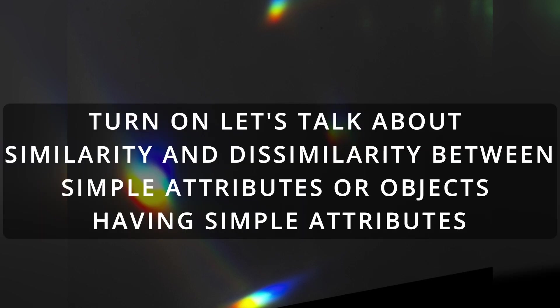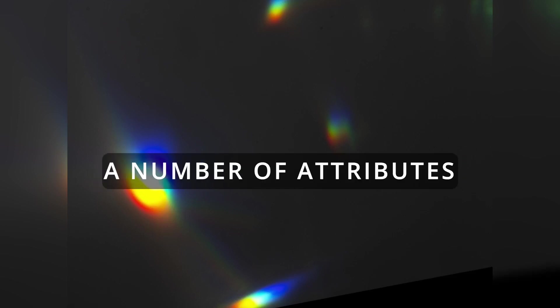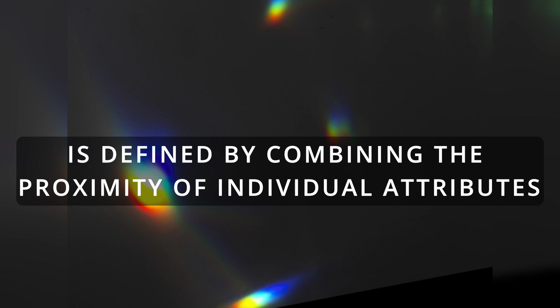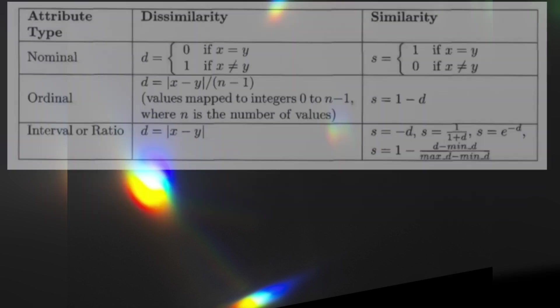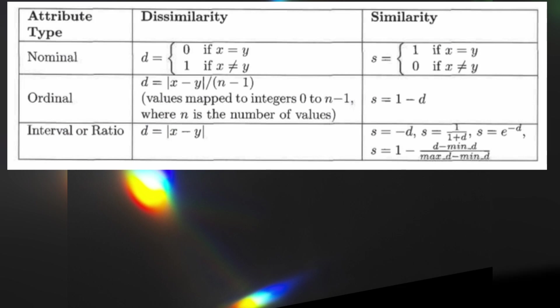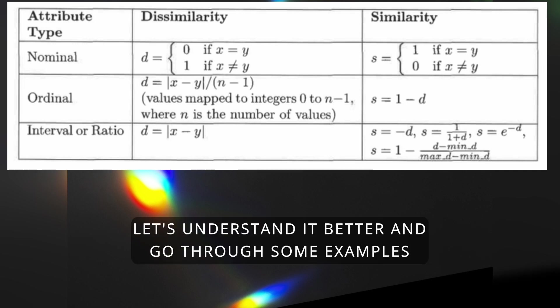Now let's talk about similarity and dissimilarity between simple attributes. The proximity of objects with a number of attributes is defined by combining the proximity of individual attributes. Let's first discuss proximity between two objects that only have one single attribute — you see an image on the screen that defines that type of attribute and how its similarity and dissimilarity is calculated.